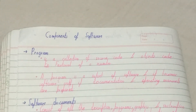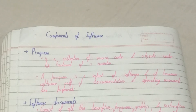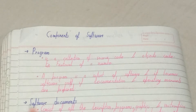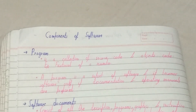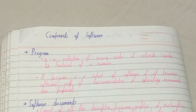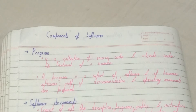Hello friends, in this video I'll be helping with the components of software. The first and main component is the program itself. A program is nothing but just a collection of source code and object code. If we take an example, it is a factorial of a number — when we want to find a factorial of a number, we write the source code and we get the factorial of a number.